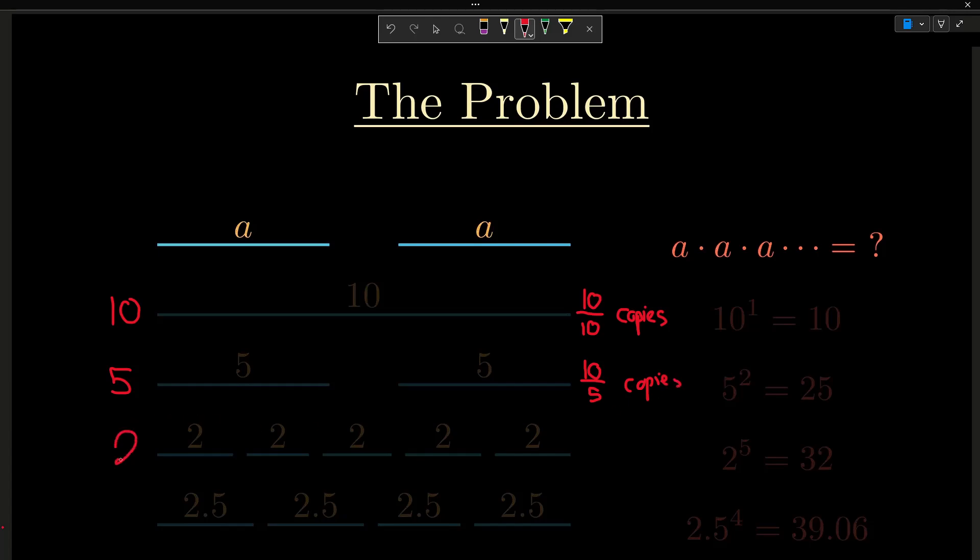And when we have a length of 2, we have 10 over 2 copies, which is 5. And we can see this is all true. So for a length a, we have 10 over a copies, which essentially means we're multiplying a by itself 10 over a times. In other words, it's really just a to the 10 over a.